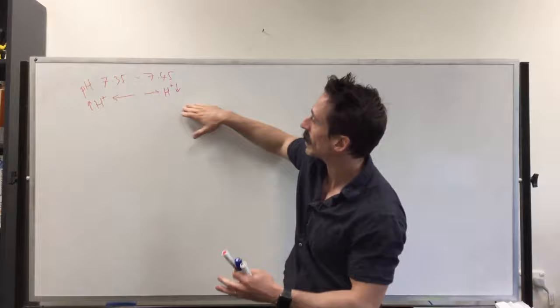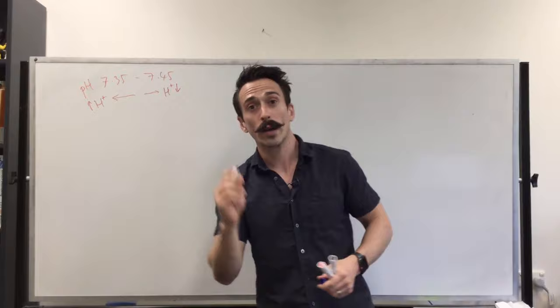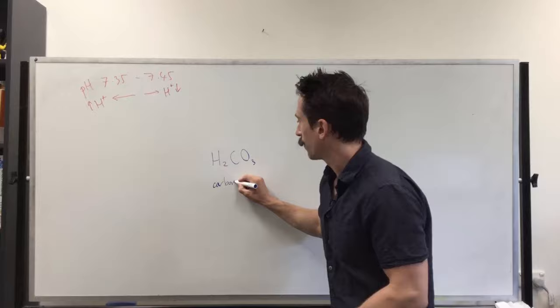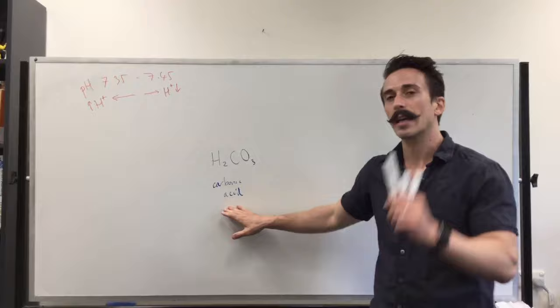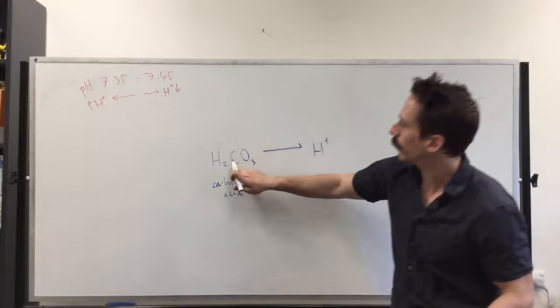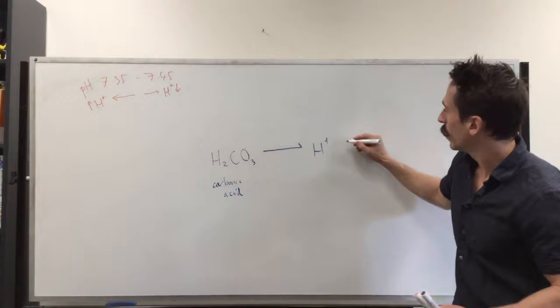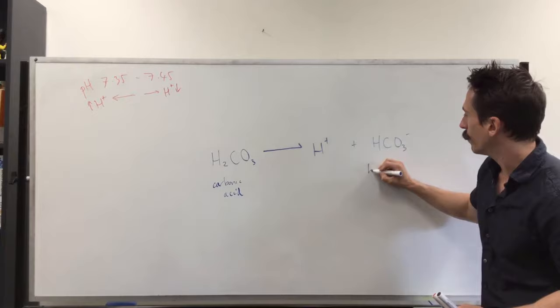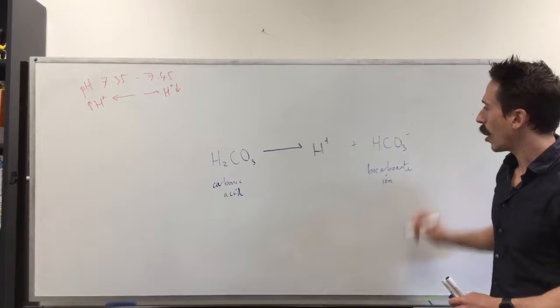For example, I want to talk about a buffer that looks like this: H2CO3. What this is called is carbonic acid. The definition of an acid is anything that can donate a hydrogen ion. So this carbonic acid can give us a hydrogen ion. If it does give us a hydrogen ion, we're left with HCO3 with a negative charge. And this is called bicarbonate ion. And this is our hydrogen ion.